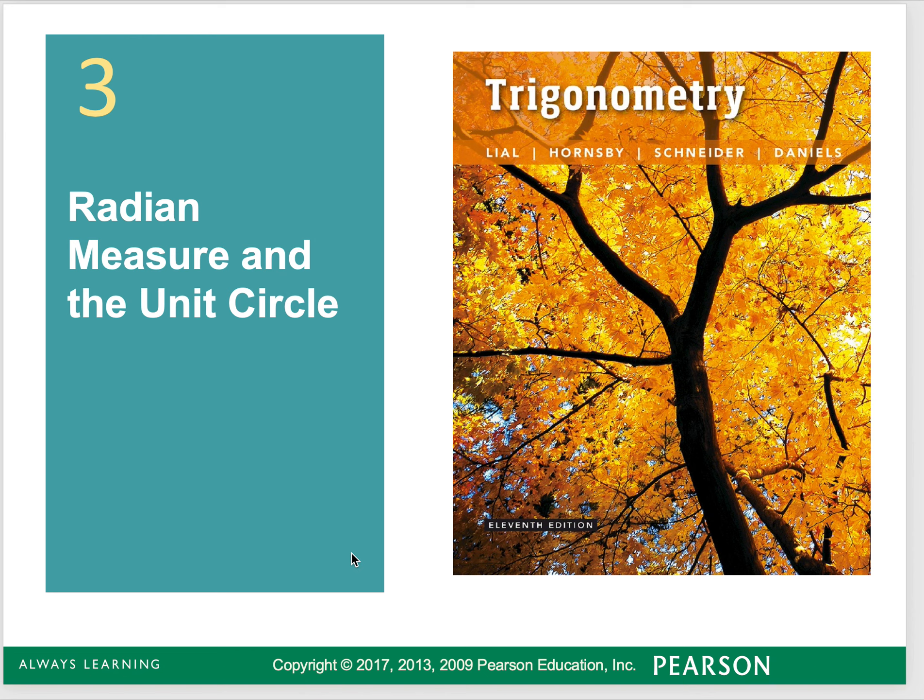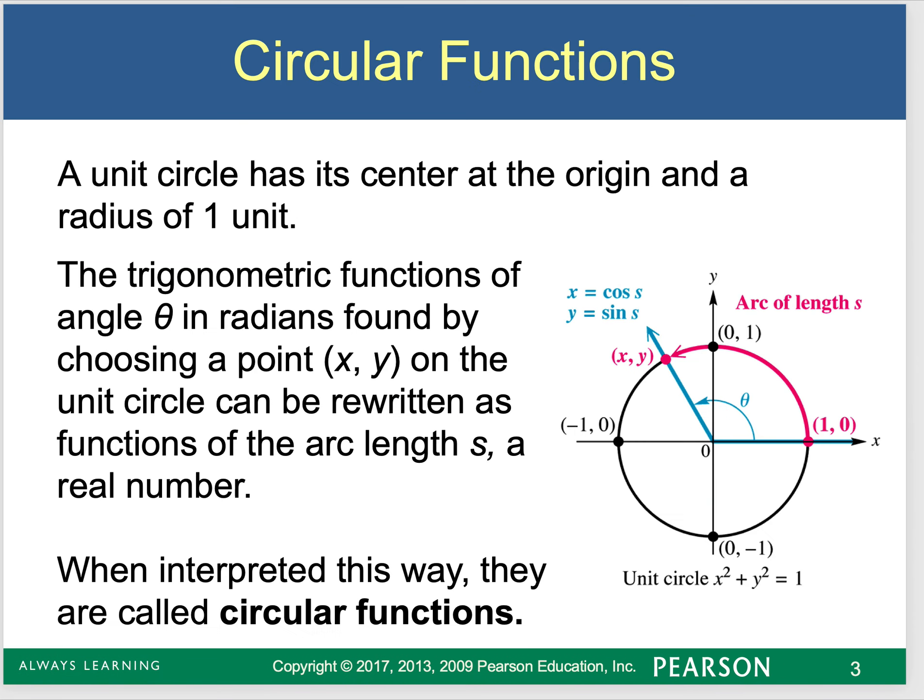Now we're going to take a look at radian measure and its relationship to the unit circle. This is not new information, we're just going to take a look at how it interacts with the radian measure. The unit circle has its center at the origin, and it has a radius of 1.